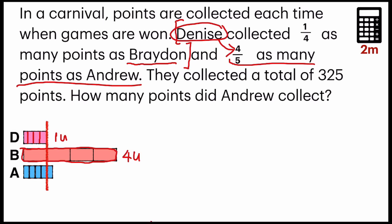Can you see? Each one of these square rectangles is cut into four parts. Same goes to Andrew who has four parts here. But because Andrew has five units, there's one more on the outside. And this pink color chunk is equal to one orange and equal to one blue.